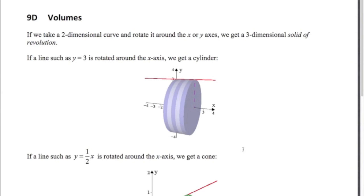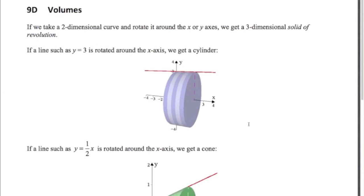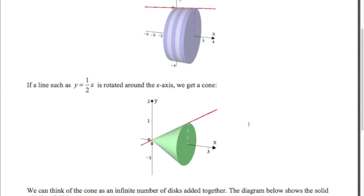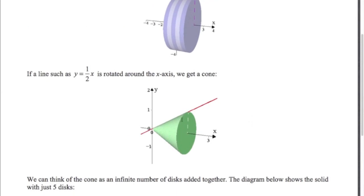Imagine if we take a straight line like y equals three and rotate it around between two values, we get a cylinder. If you get a straight line like y equals a half x and rotate it around the x-axis between say two and zero, you get a cone.